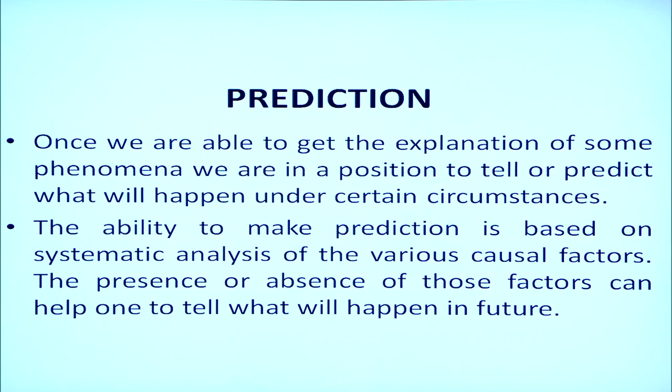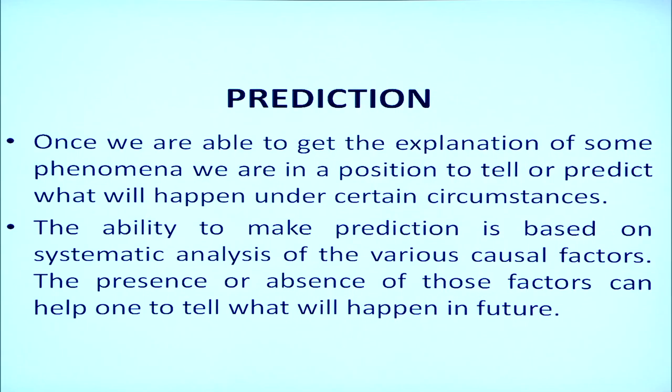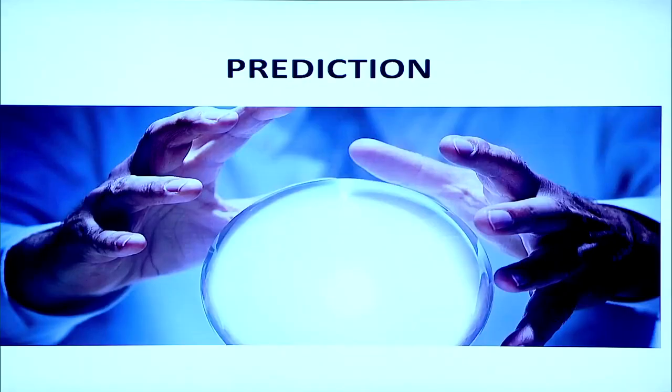Prediction is the next aim of psychological research. Once we can explain a phenomenon, we are in a position to predict what will happen under certain circumstances. For example, if a child studies for three hours a day, how will that hard work affect their learning? The ability to make predictions is based on systematic analysis of causal factors — it is not like magic, but is grounded in scientific logic.